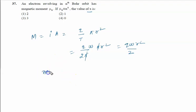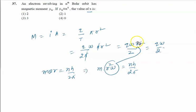Then we know mvr equals nh upon 2π. Put v equal to rω. So mr²ω equals nh upon 2π. Put the value of r²ω here. You will get it is qω upon 2, and r²ω is q by 2, not ω. So it is q by 2, nh upon 2π, and m will come here. So it is given by qnh upon 4πm.